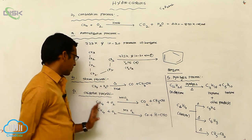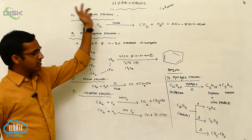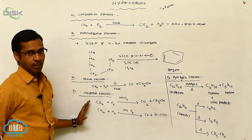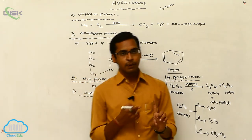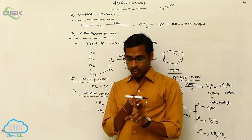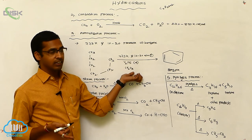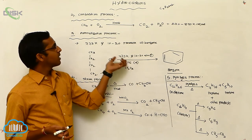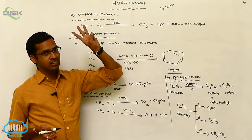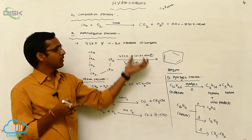So this is the pyrolysis process, condensation process, steam process, aromatization process, combustion process, and substitution — these are the chemical properties of alkane, especially for ethane. In this topic we discussed the preparation of ethane, IUPAC nomenclature, structural isomerism, and the chemical properties of alkane. Hydrocarbons are of three types: saturated, unsaturated, and aromatic. The saturated alkane topic is now completed.